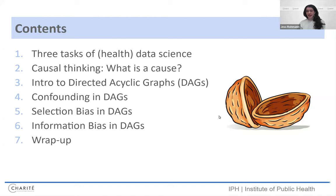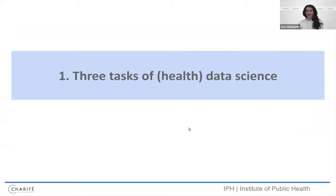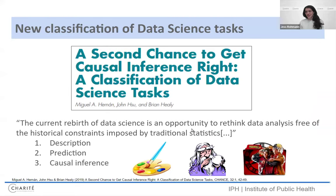So what we'll do here today, I'll go through the three tasks, as they call them, of health data science. I'll talk about causal thinking, introduce these DAGs to you, show you how they can be used for confounding, selection bias, and information bias, detection, and mitigation, and then try to wrap things up.